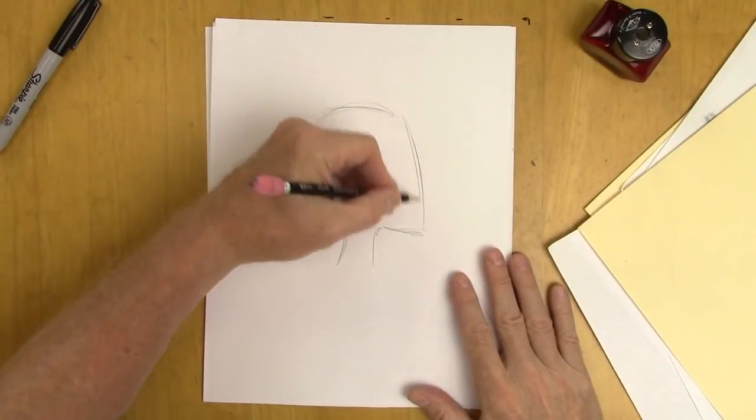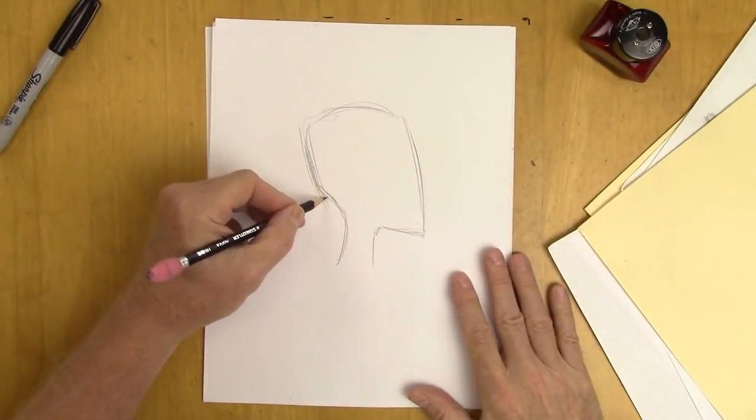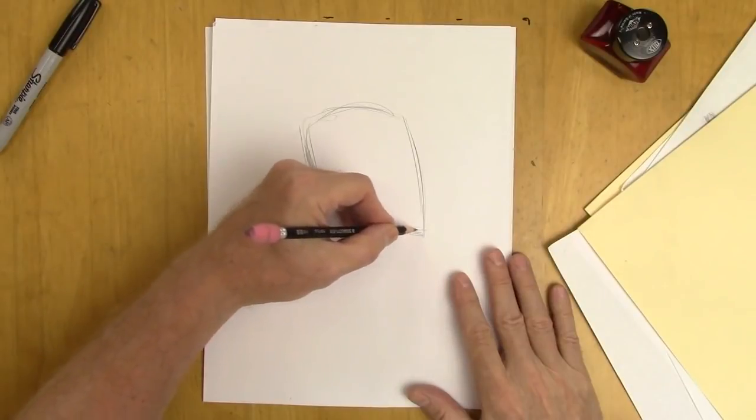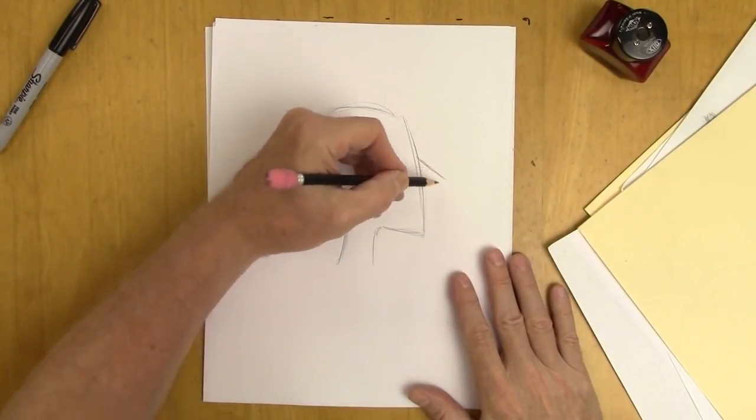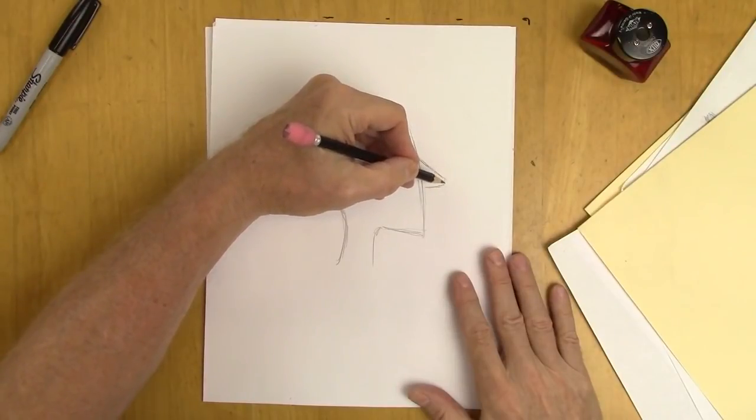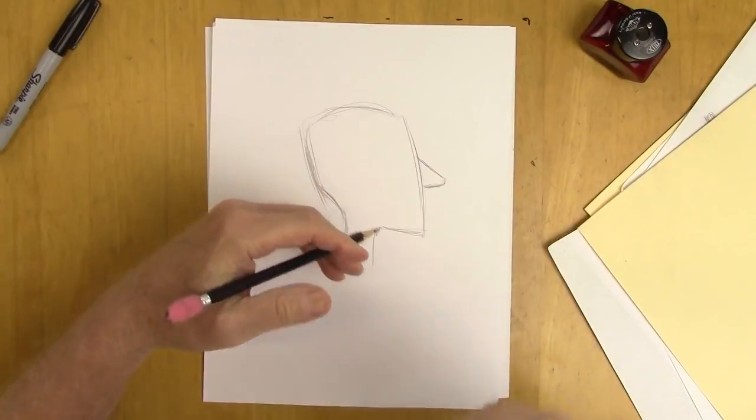So let's start with kind of a typical guy. Here's the back of the head sloping into the neck and the chin, and we'll bring that straight nose out. I'm going to show you how to change this with just a quick line to change it into something different.